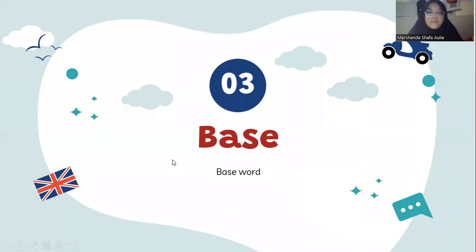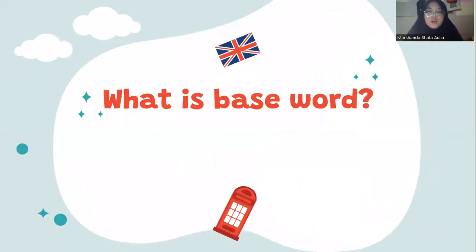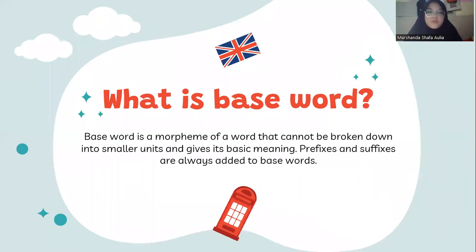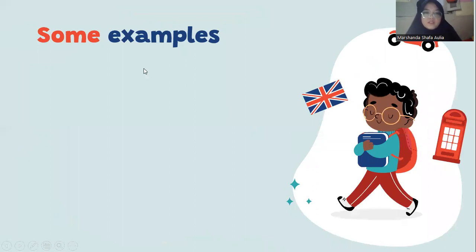Then the third topic is base word. A base word is a morpheme of a word that cannot be broken down into smaller units and gives its basic meaning. Prefixes and suffixes are always added to base words. Essentially, a base word is another name for a free morpheme, but sometimes prefixes or suffixes are added to it to create a new meaning or a new word.